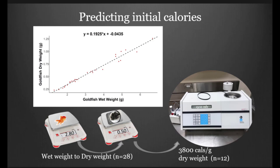Looking at or trying to predict the initial kilocalories going into the fish, we had to use a subsample of 28 goldfish. We converted their wet weights to dry weights through this linear regression here. We actually used that sample to relate back to the known wet weights of the goldfish fed to our flatheads and predicted their dry weights. We then took 12 of those individuals and calculated an average kilocalories remaining, or kilocalories per gram dry weight, and applied that as well to predict how many kilocalories we were actually feeding to our flathead catfish.